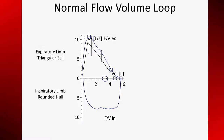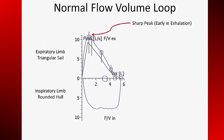A normal flow volume loop looks like a child's drawing of a sailor. Flow is displayed on the vertical axis and volume is displayed on the horizontal axis. The origin is the start of an expiratory maneuver from maximal inspiration or total lung capacity. Note that positive movement along the volume axis represents a decrease in lung volume — this is due to the historic methodology of a bell spirometer which would rise during exhalation. The black trace shows the computer projection of a normal exhalation. The expiratory limb of the maneuver is a triangular sail above the waterline, and the peak in expiratory flow is very early in the exhalation, creating that triangular appearance.